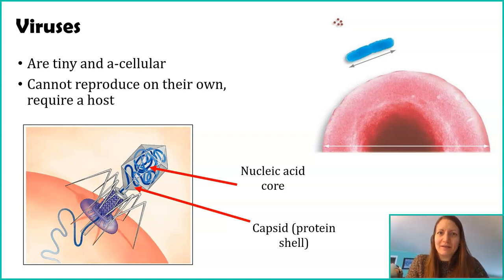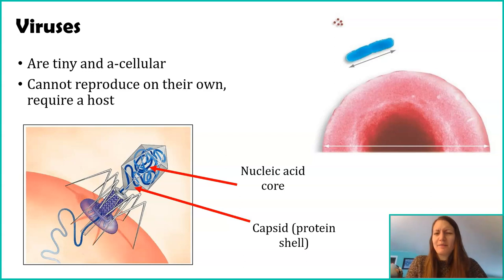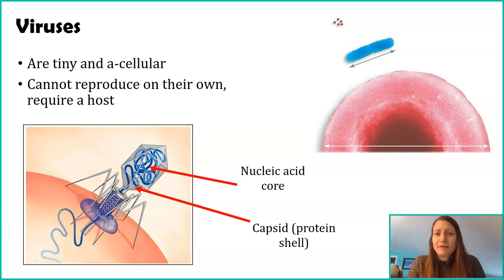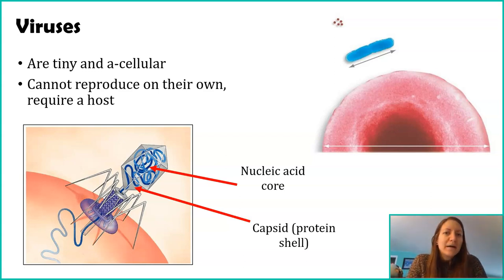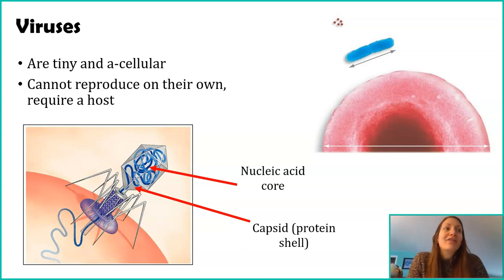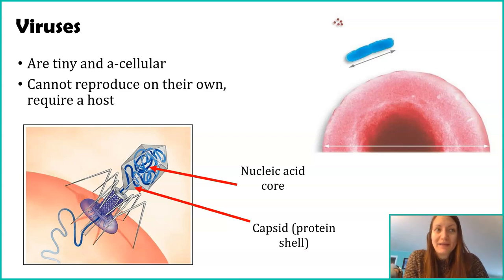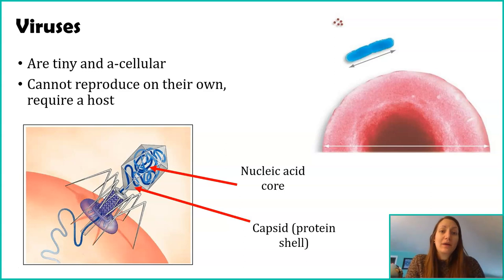You might be thinking: aren't there parasites that have to rely on a host — why do we consider them alive? Pretty much every single parasite has the ability to reproduce on its own. It just wants the conditions of a host and gets nutrition from the host. But parasites physically have the ability to do their own reproduction — they're not hijacking cells or organelles to reproduce. Viruses, however, cannot do it at all by themselves and rely entirely on the organism's cellular network to reproduce.